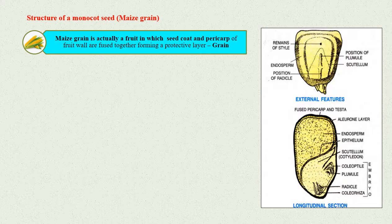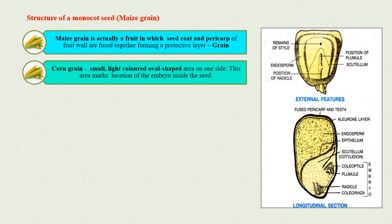That is why it is called a grain. If you look at the corn grain, you will find a small light-colored oval-shaped area on one side. This area marks the location of the embryo inside the seed.